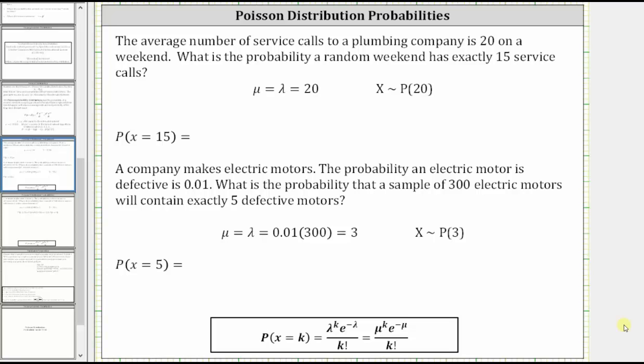In this video, we will look at two examples of determining probabilities of a Poisson distribution. In the first example, the average number of service calls to a plumbing company is 20 on a weekend. What is the probability a random weekend has exactly 15 service calls?